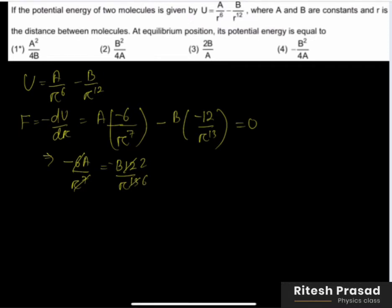So now here we get the relation: minus A by 1 equals minus 2B by r to the power 6. Cancel the minus signs. So 2B by A equals r to the power 6.